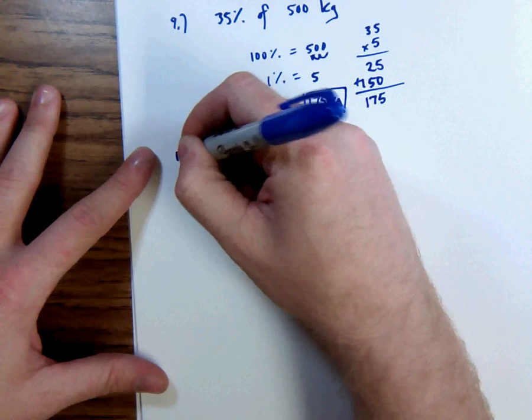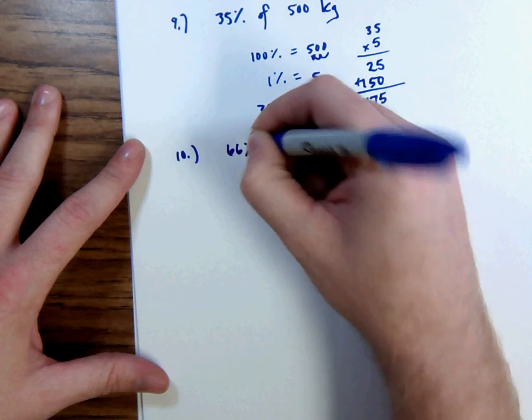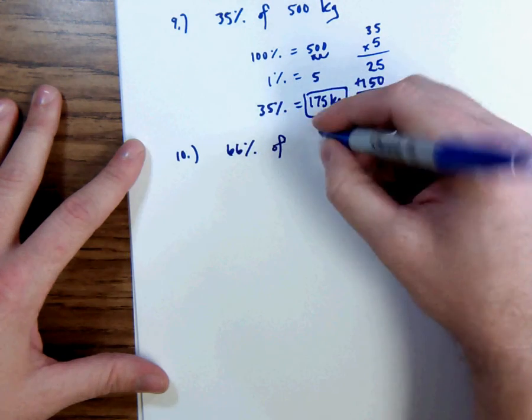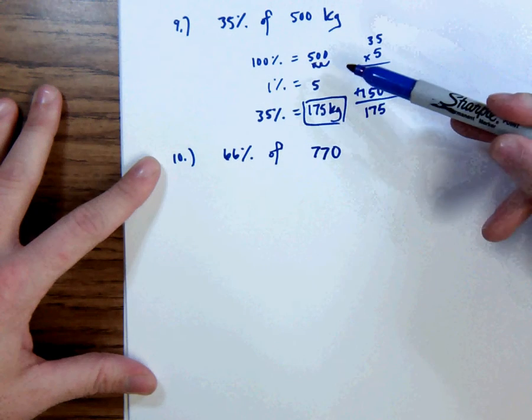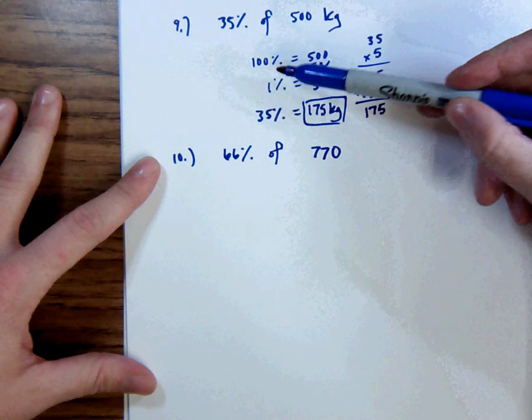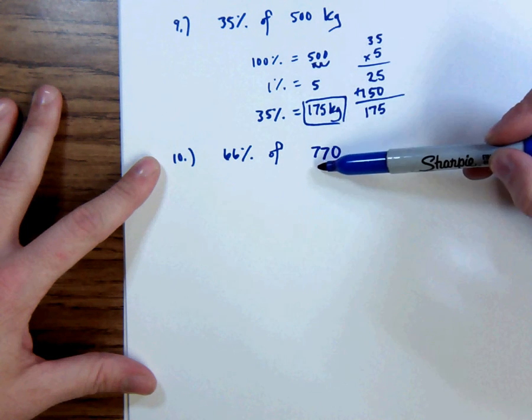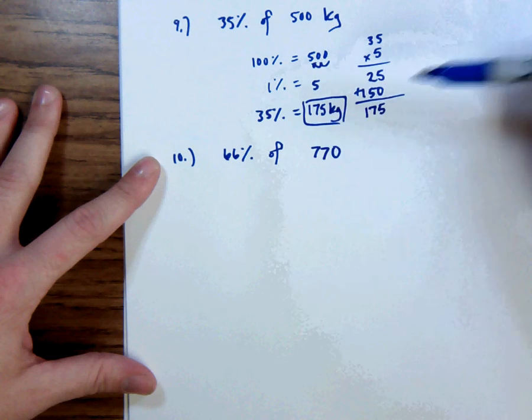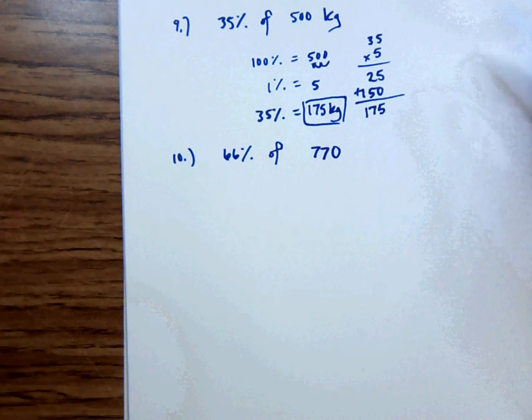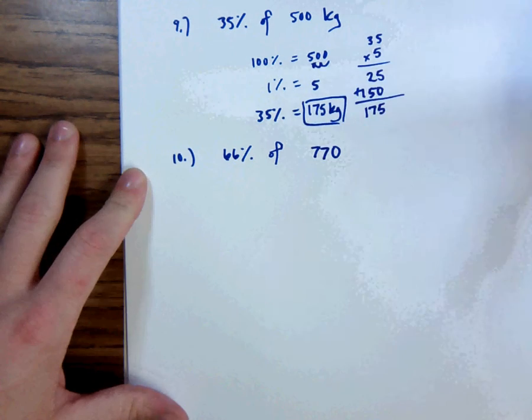Number 10 works the same way, different numbers. We want to find 66% of 770. And I'm going to show you a different way to do this one. This way would work the exact same way. We would say 100% is equal to 770. 1% is equal to 7.7. And 66% is equal to 66 times that 7.7. And I know I didn't write that down, but it could work the same way as this one.